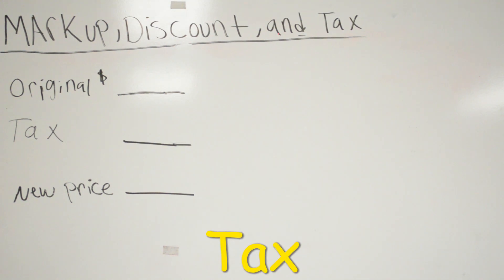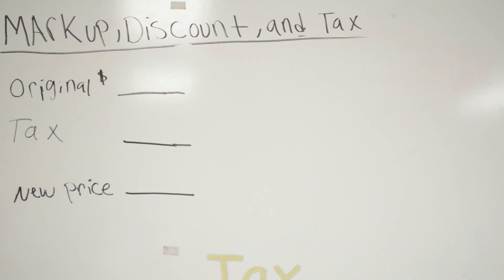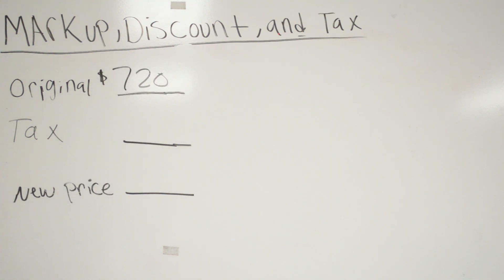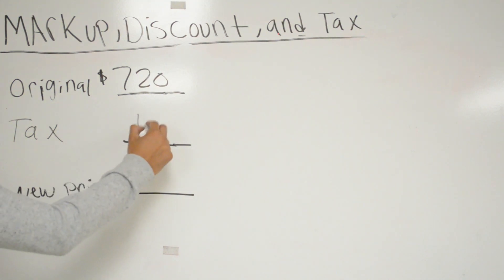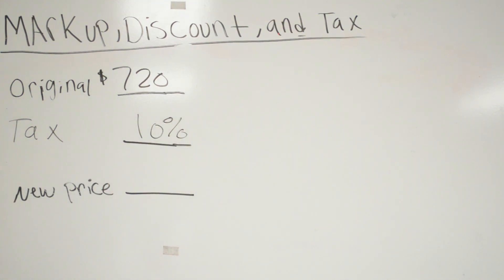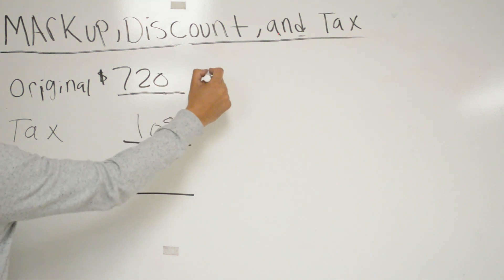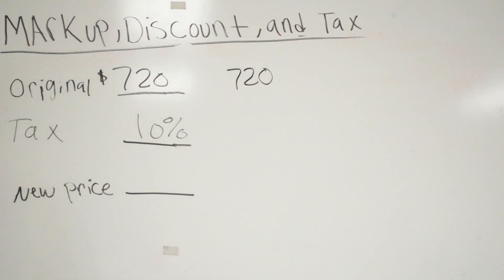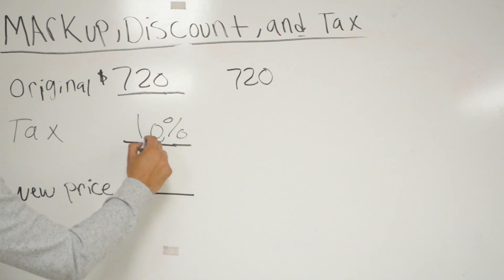Now we're going to talk about tax. I want to buy a new computer and the original price is $720. The tax on that computer is going to be 10%. We need to find the final price I'm going to pay after taxes. So we're going to do 720 times 10% — moving the decimal two places to get 0.10.